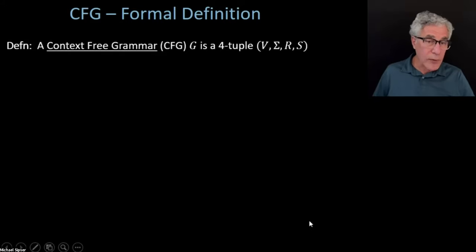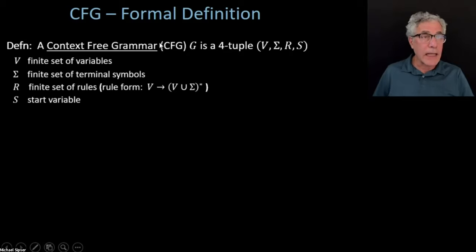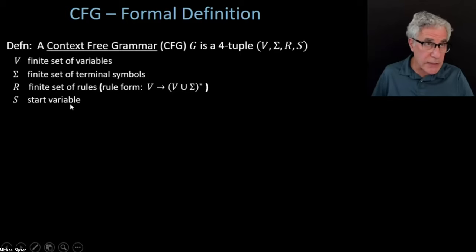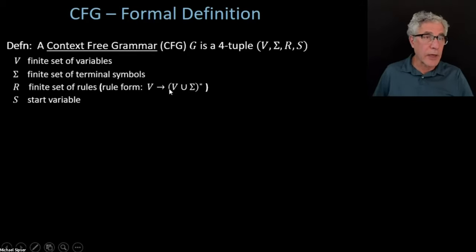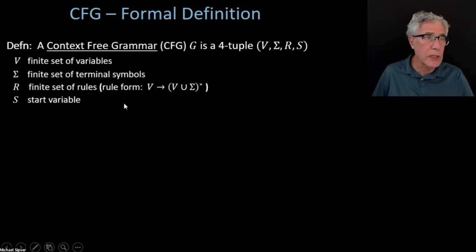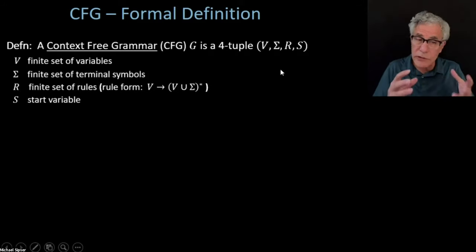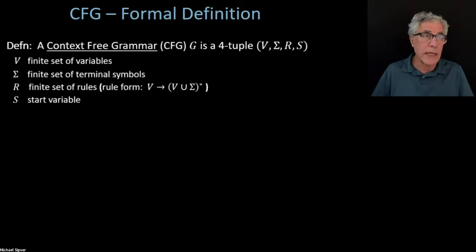Here's our formal definition. A context-free grammar is a four-tuple. There are four parts: the variables, the terminal symbols, the rules—which are always of the form of a variable followed by an arrow to a string of variables and terminals—and the special start variable. That's what the context-free grammar is, all wrapped into this four-tuple package.